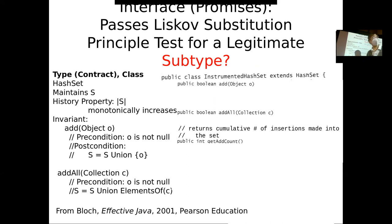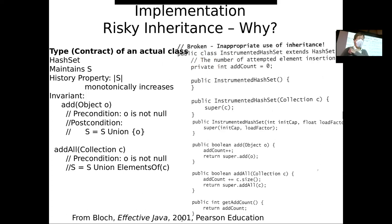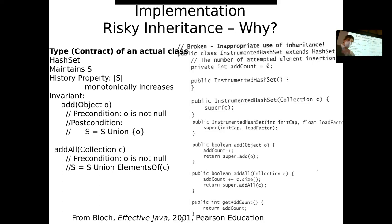The original HashSet doesn't keep track of how many times things have been added — this subtype will. It'll add that little spiffy feature on it. Notice that the Liskov substitution principle is just about promises — this is the implementation. The code of InstrumentedHashSet is risky. The promises are just fine — it passes the Liskov substitution principle with flying colors. But the implementation can be problematic.